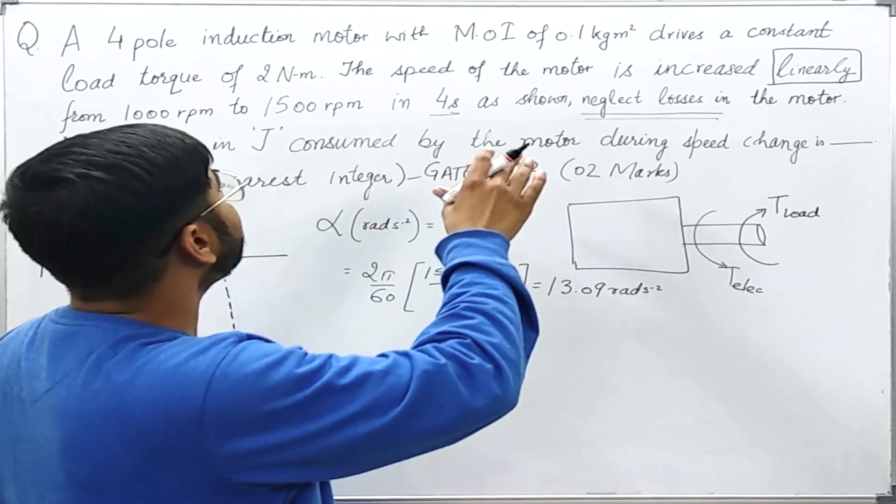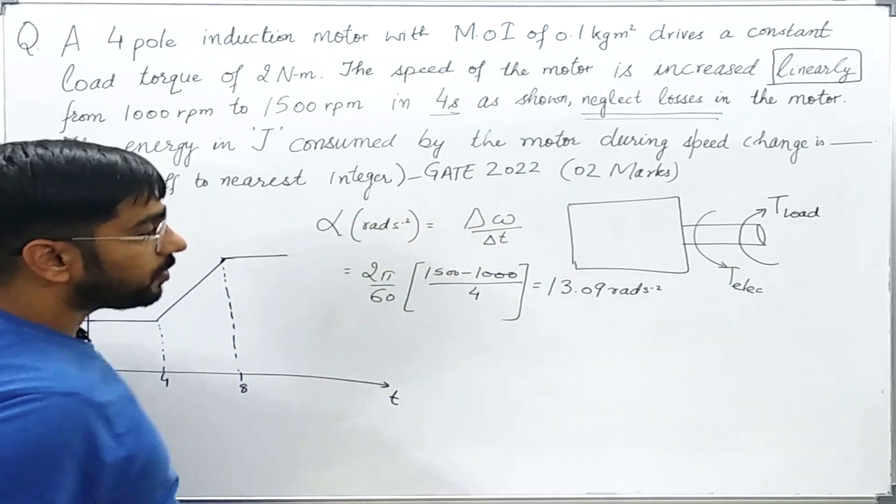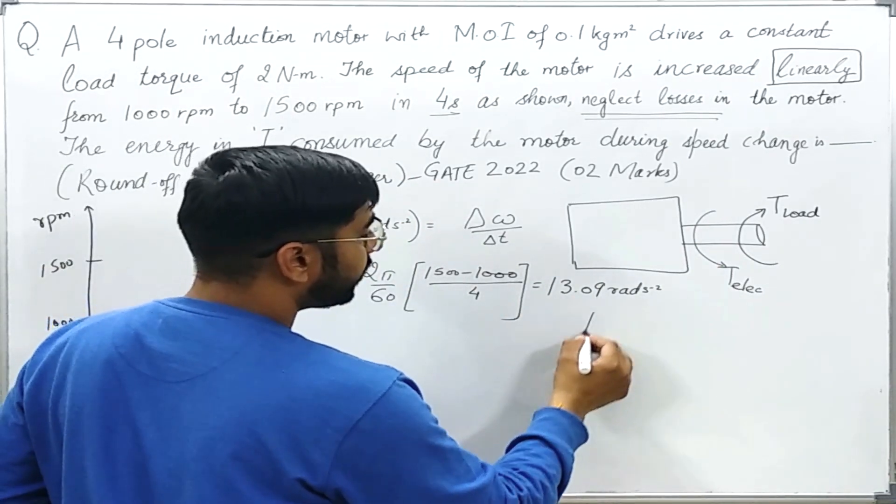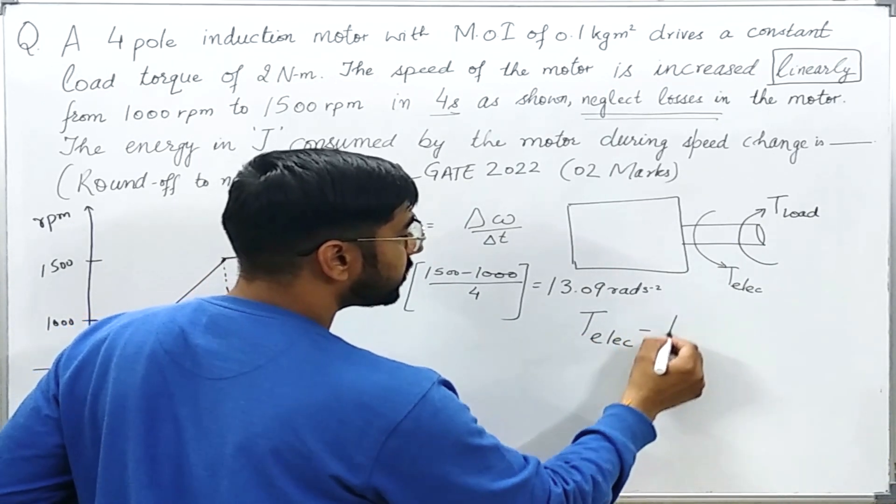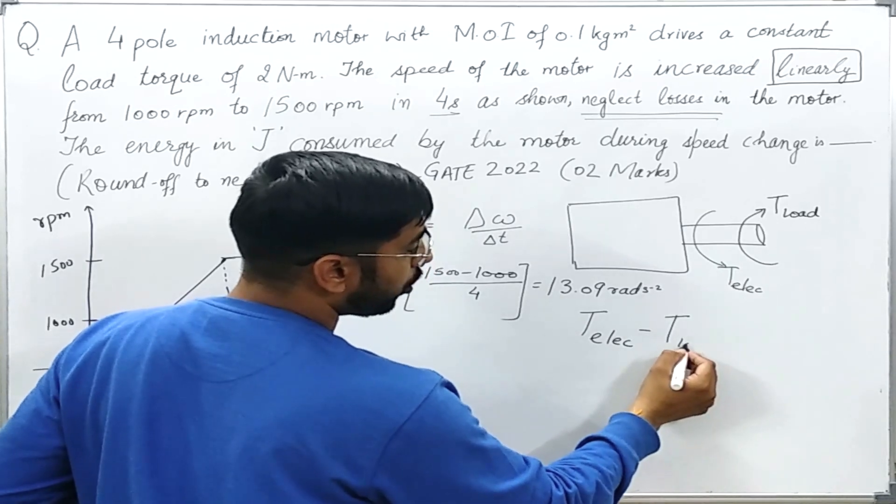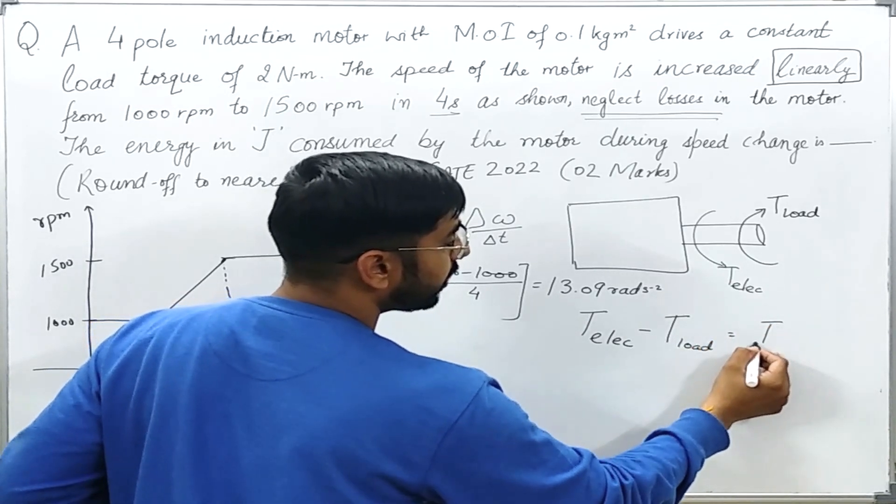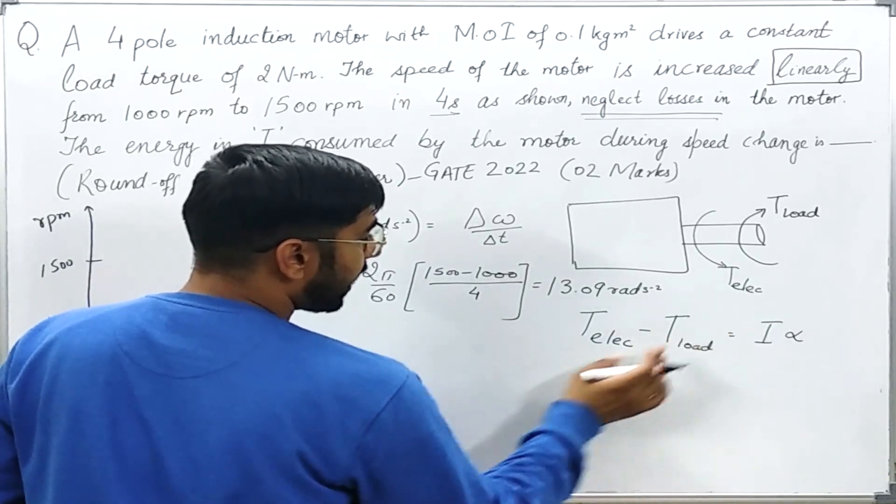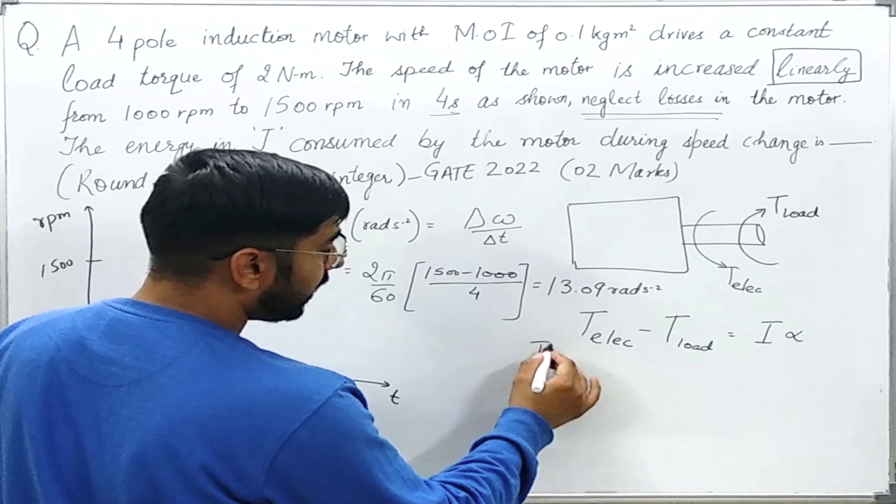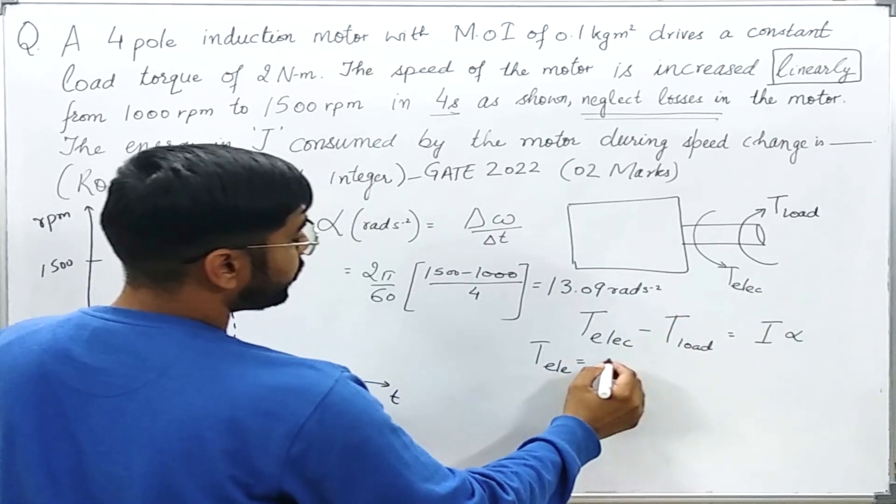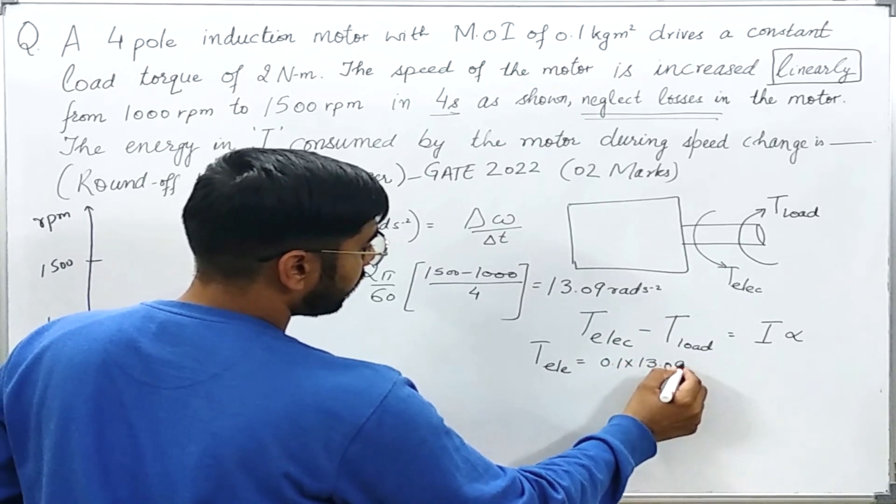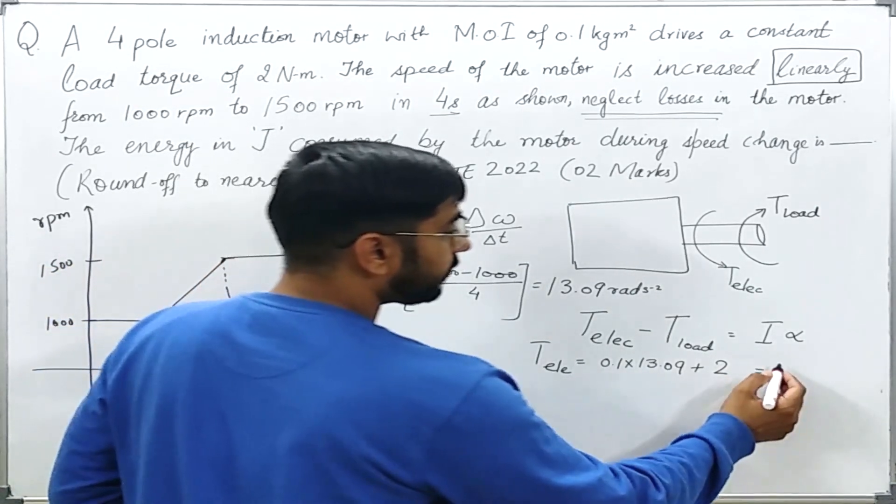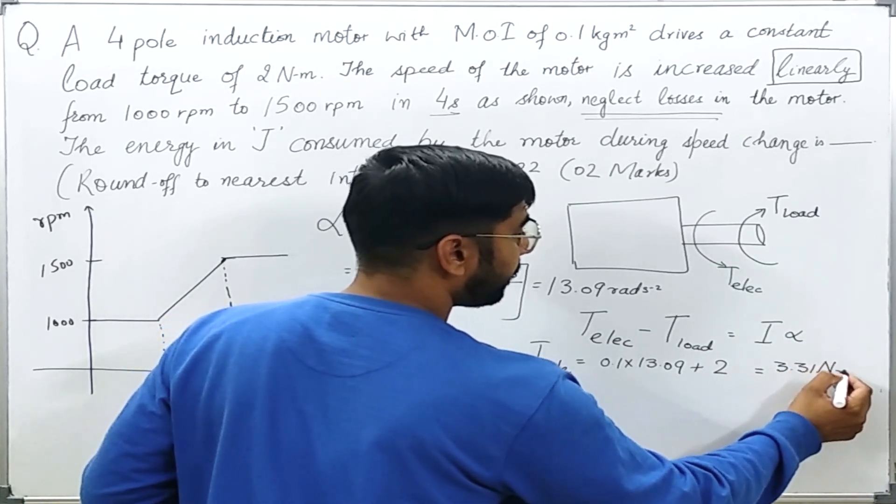Again, if I just see that this alpha is now a constant, now it is very easy from this free body diagram that I can see that during this change of speed I can write T_electrical minus T_mechanical or T_load is equal to I·alpha where I is the moment of inertia of this motor. So from this I can see what the value of T_electrical is. T_electrical will be simply I·alpha, will be 0.1 into 13.09 plus T_load which is 2 Nm. So it comes out to be 3.31 Nm.